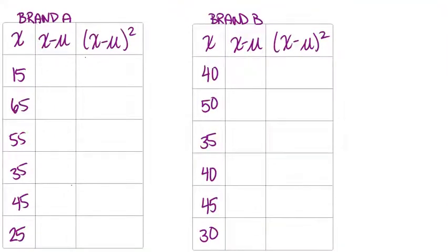We have a new table for Brand A and Brand B and I already filled in the x values that we had above. Now we just need to figure out the difference between each x value and the mean, and remember the mean for each brand was 40. Then we'll square each of those. To figure out the difference, we just take the x value and subtract 40. So 15 minus 40, 65 minus 40 and so on and fill those into the table.